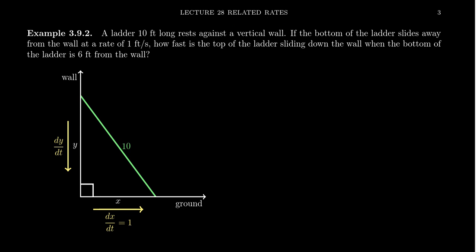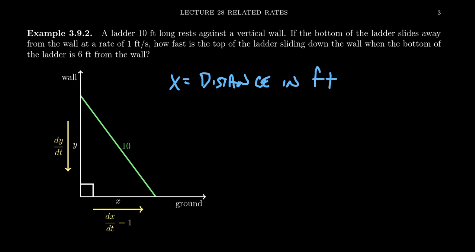What do we know, and what are we trying to figure out? If the bottom of the ladder is sliding away from the wall, we can define a variable as the distance between the wall and the bottom of the ladder. Let's take X to equal that distance, measured in feet — the distance in feet between the wall and the ladder.